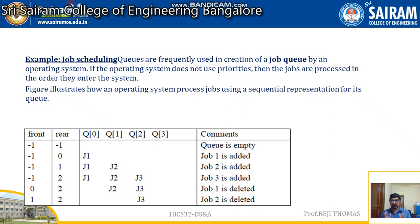So if the jobs are not prioritized, what happens? This will be stored something like this. There are two variables: one is front and the other one is rear. If the queue is empty, front and rear are going to point to the same value, which is minus one. Think that job one is added — rear is going to change its position from minus one to zero.